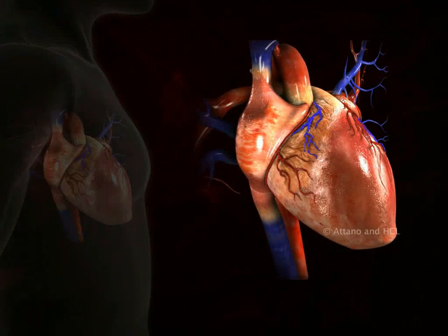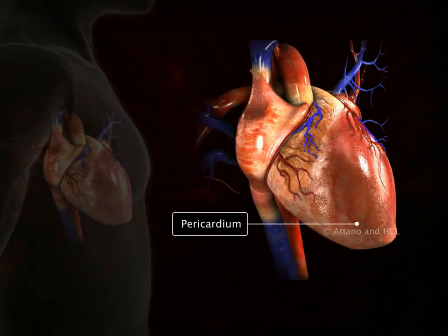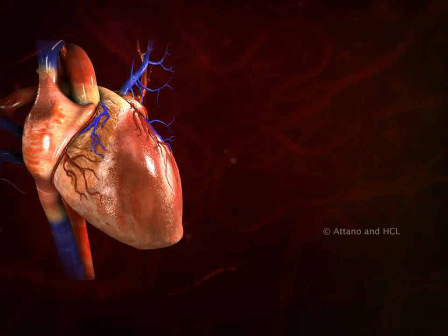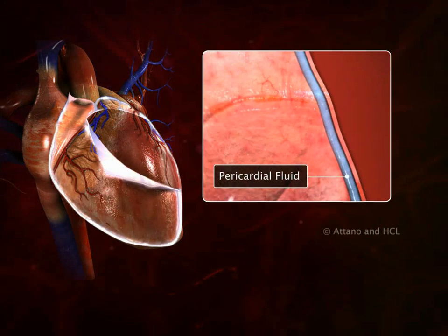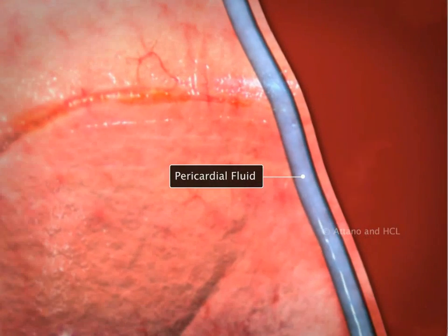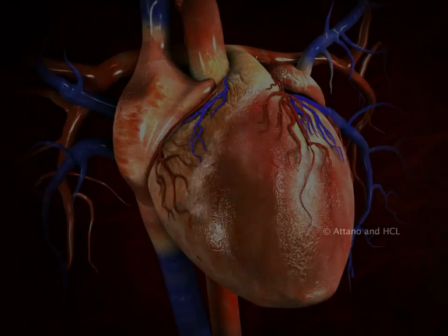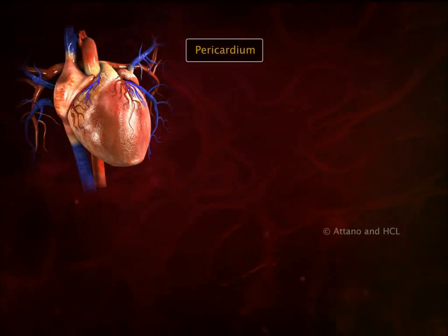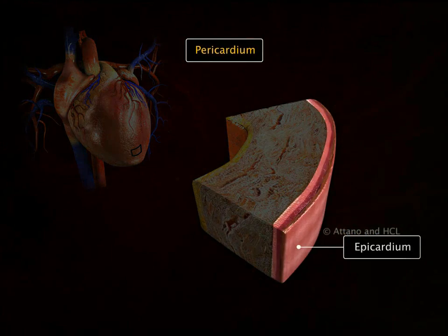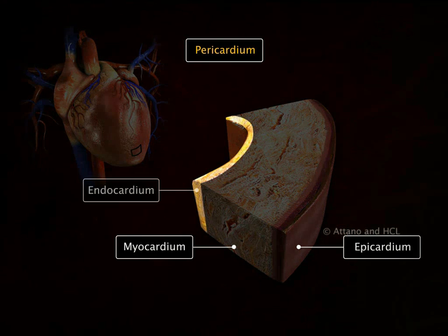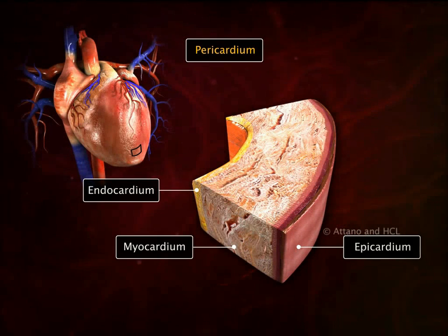The outermost covering of the heart is the pericardium. The pericardium is a double-walled membrane, and the pericardial fluid flows between the two walls. The pericardium is followed by the epicardium, myocardium, and endocardium. Together, they constitute the wall of the heart.